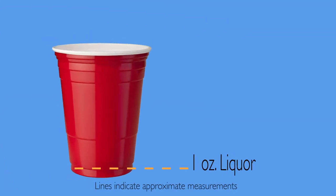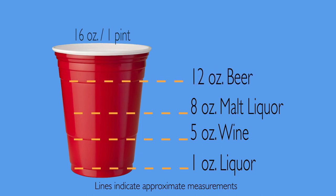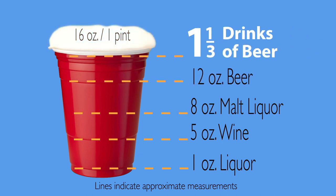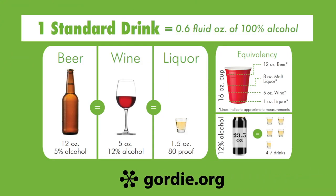The markings on some cups can help estimate the number of drinks. Most hold 16 ounces — a pint — so filling to the top with beer equals one and a third drinks. Understanding a standard drink helps you make informed choices.